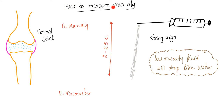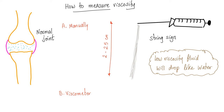How to measure the viscosity of synovial fluid? You aspirate the joint — this is called arthrocentesis. You get the needle of the syringe and then drop the fluid, watching it until it hits your desk or the floor. You measure the distance between the needle and the surface. Normally it's between 2 and 2.5 centimeters. This is called the manual method.